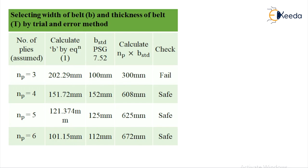By selecting the width of the belt B and the thickness of the belt T by trial and error method, you can see from the table here, number of plies that we have assumed as NP is equal to 3, 4, 5 and 6. We will calculate the value of B by equation number 1 as 202.29, 151.72, 121.374 and 101.15 mm respectively.